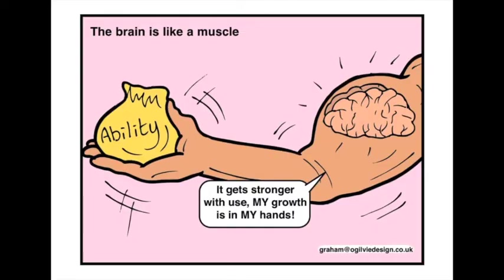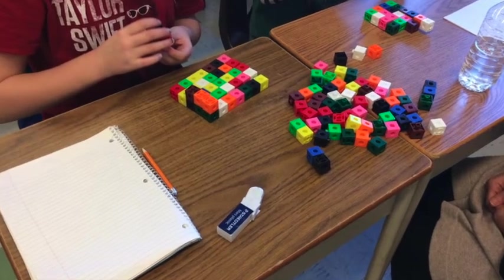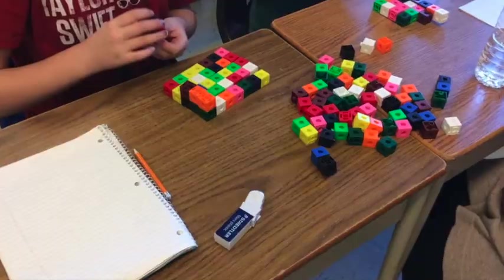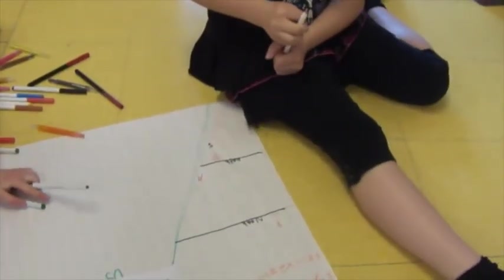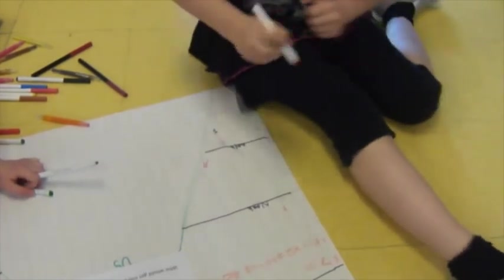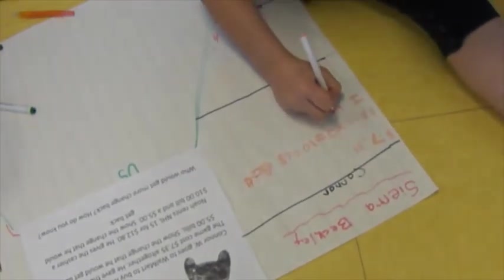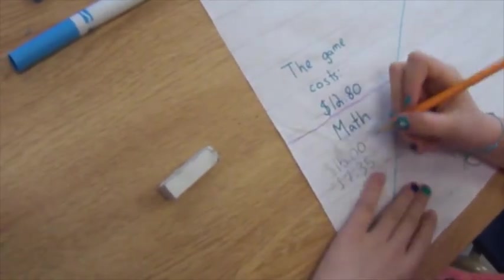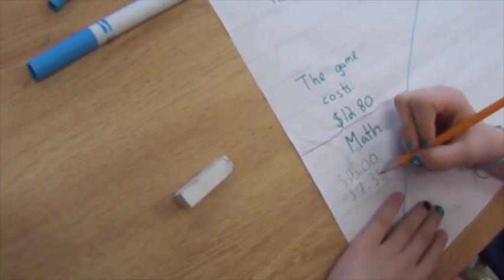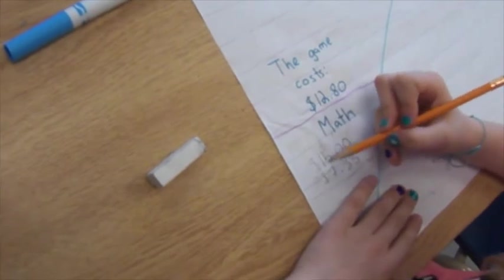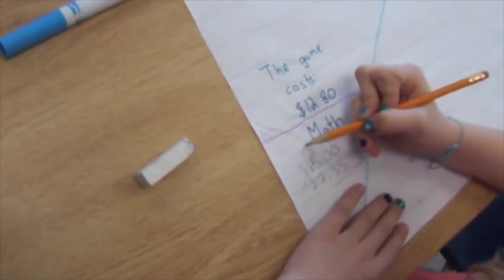Our brain is like a muscle that gets stronger and works better the more that it is exercised. Every time you work hard, stretch your brain and learn something new, your brain forms new connections, and over time you actually become smarter. Someone with a growth mindset embraces hard work and challenging tasks because they understand that this is the only way to grow their brain. Conversely, someone with a fixed mindset avoids tasks that are challenging and often gives up when they are stuck.